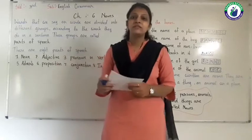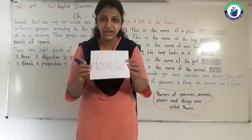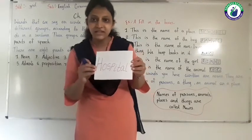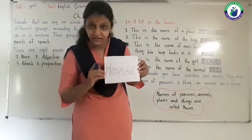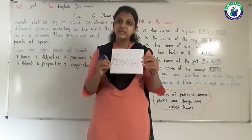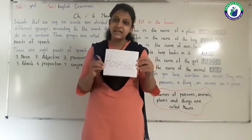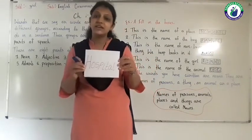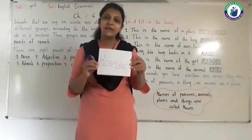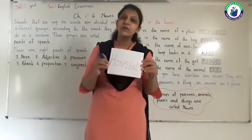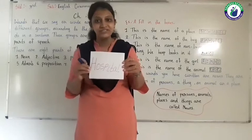Now I will explain by showing these flashcards. Look at these flashcards. Which spelling is this? Yes, the spelling of hospital. Can you tell me — hospital, we have to include it in which category? Person, place, animal, bird or thing? I will tell you — the word hospital is the name of a place. So we can call the word hospital a noun.